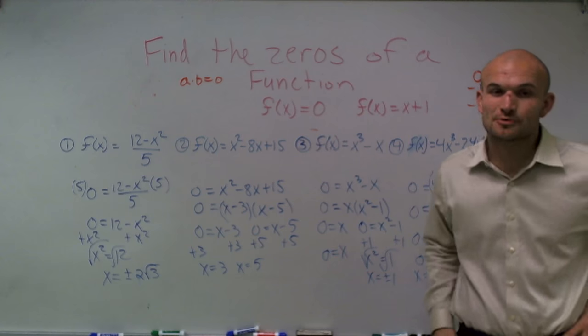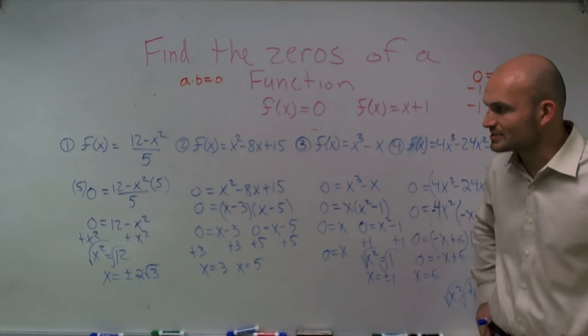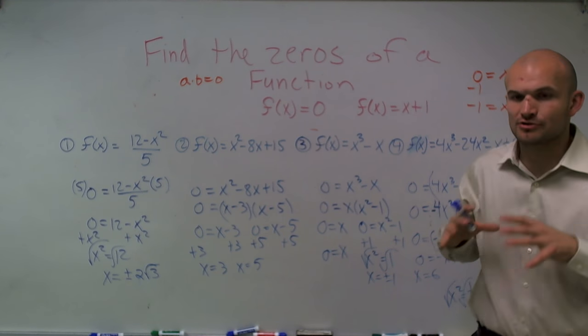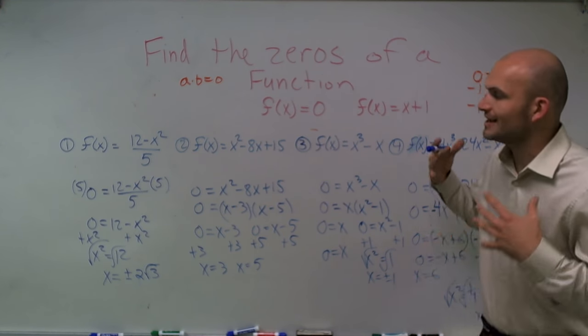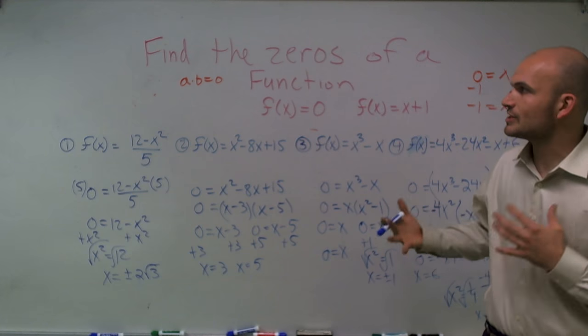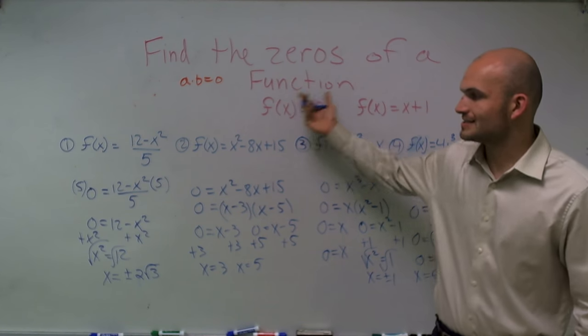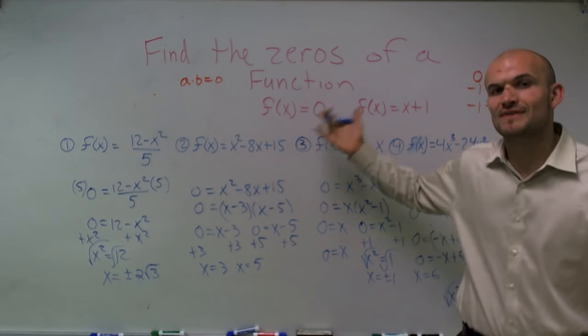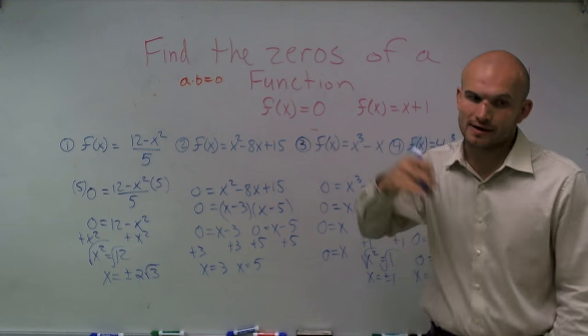I hope this helped you out. Just a couple of minutes — make sure you remember your rules for solving. Whenever you're trying to find the zeros, just take your f of x equal to 0 and find the values of x that make it 0. Thanks for watching.